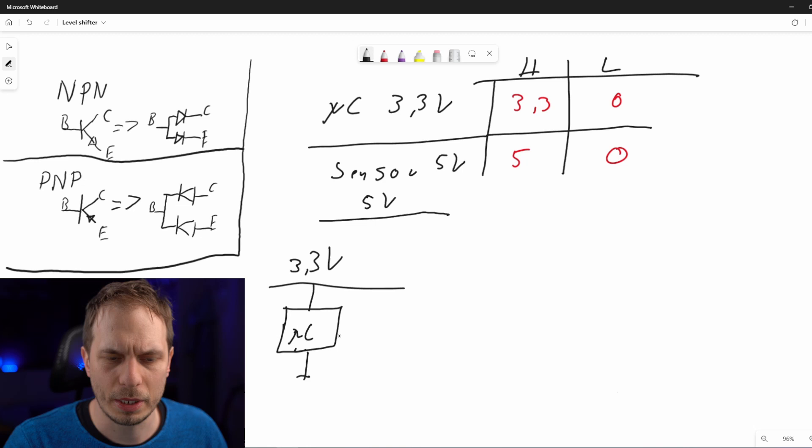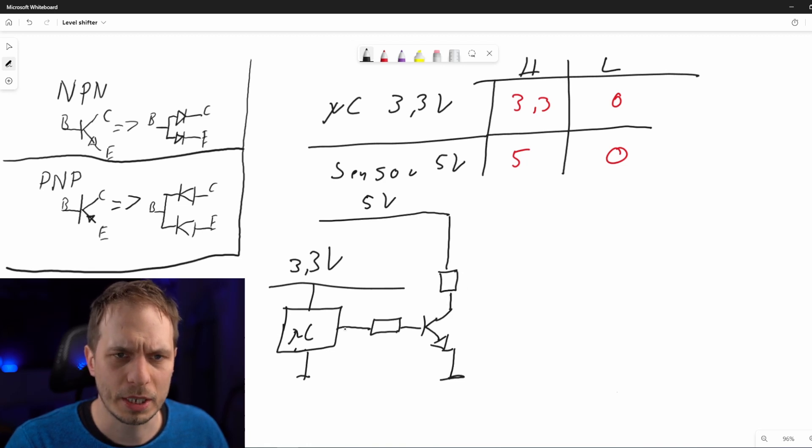We have a way to put out a signal to a transistor. For this we use an NPN transistor because we just want to pull the signal down. Now we can connect it to 5 volts over some kind of resistor and check what is happening.